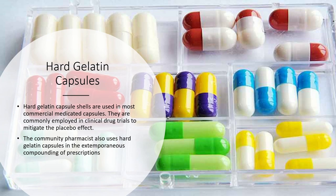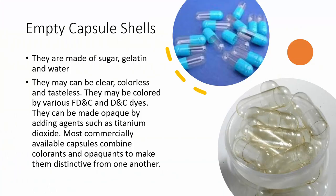The community pharmacist also uses hard gelatin capsules in extemporaneous compounding of prescriptions. If you are in a compounding pharmacy, it might be useful to have a range of different size gelatin capsules. Empty capsule shells are made of sugar, gelatin, and water — mostly gelatin.